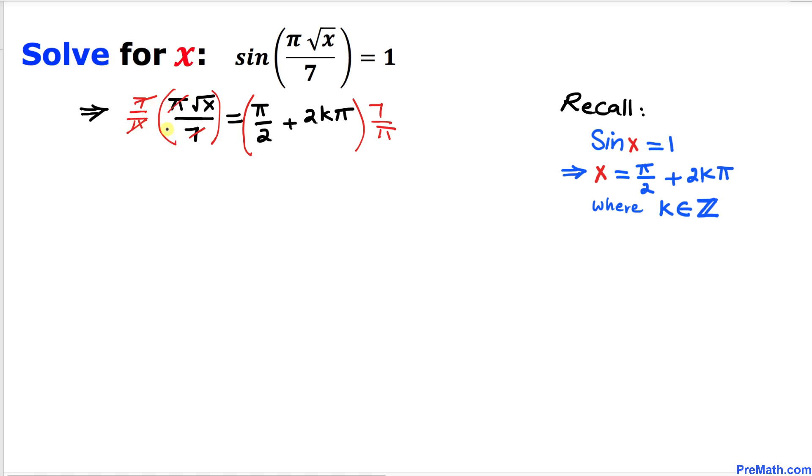On the left hand side we end up with just the square root of x. Now let's distribute the terms on the right. We can write this as pi over 2 times 7 over pi, plus 2k pi times 7 over pi.